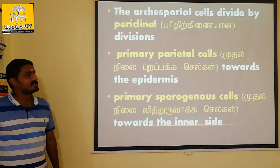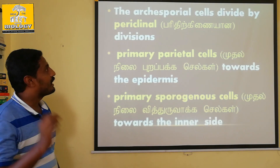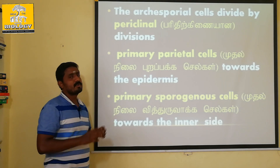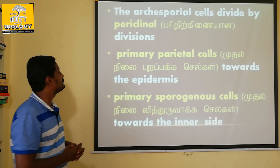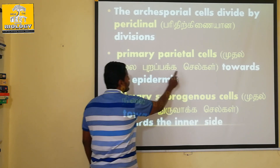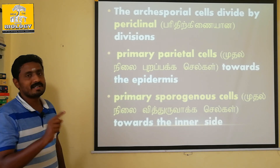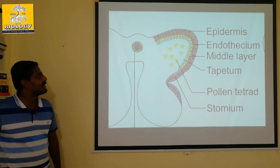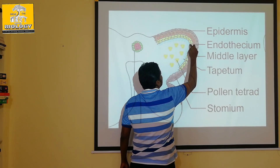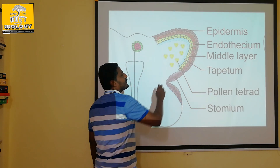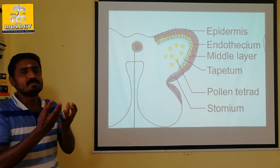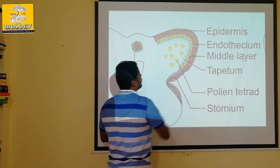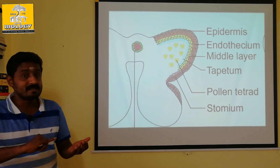So in the archesporium cells — in step 2 — the third step involves archesporium cells forming primary parietal cells and primary sporogenous cells through periclinal division. From the primary parietal cells, the wall layers are formed. Looking at the diagram, there are 4 layers — these are the wall layers. The pollen grains are also visible.